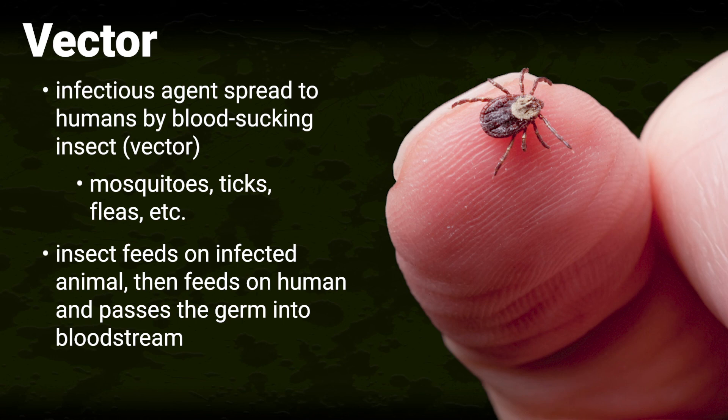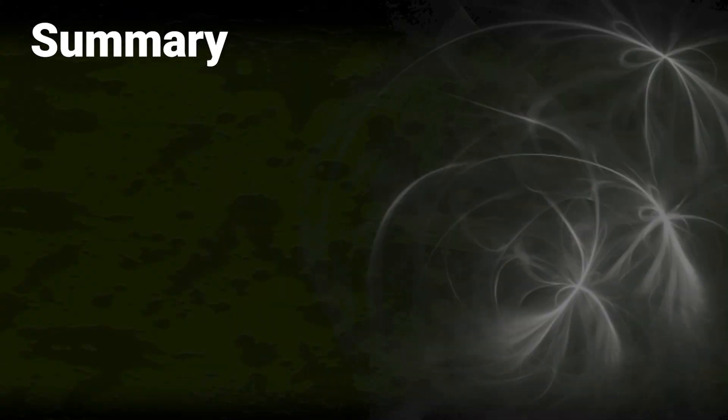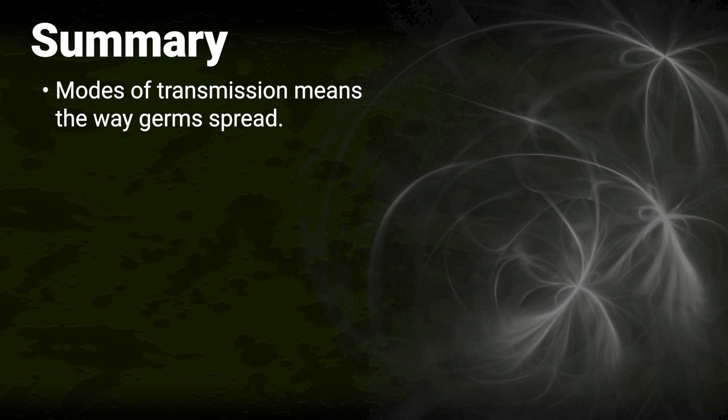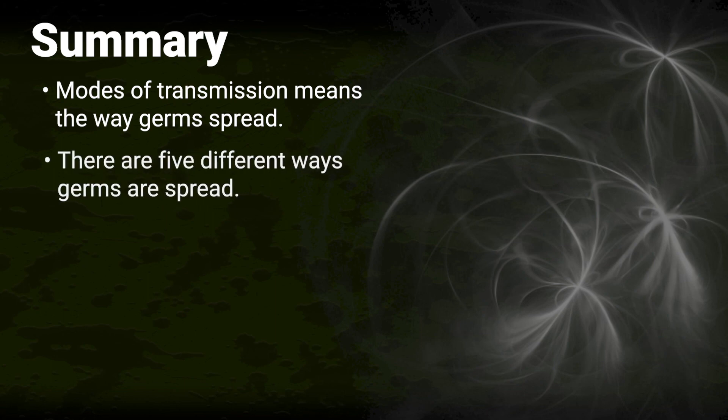Examples of vector-borne diseases include malaria and Zika. In summary, modes of transmission means the way germs spread, and there are five different ways germs are spread.